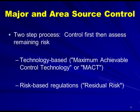When it comes to major and area source control of air toxics, it's a two-step process. We do controls first, and then we assess the remaining risk after we've adopted control measures. The controls are technology-based standards known as Maximum Achievable Control Technology, or MACT. After we impose the MACT standards, we assess the residual risk and then promulgate risk-based regulations.